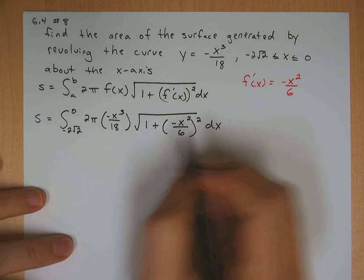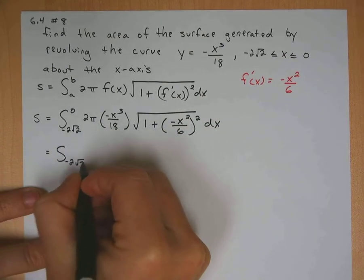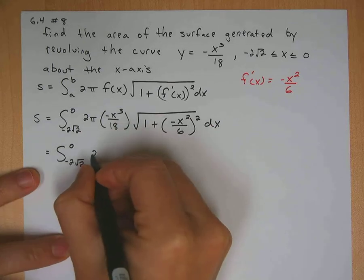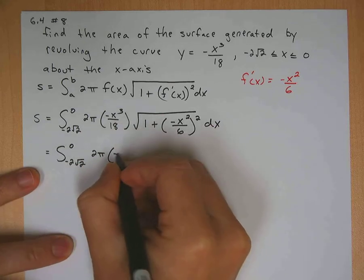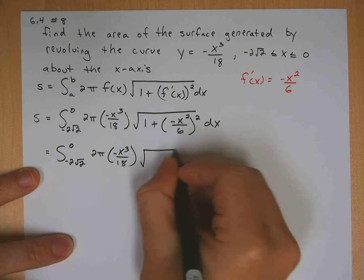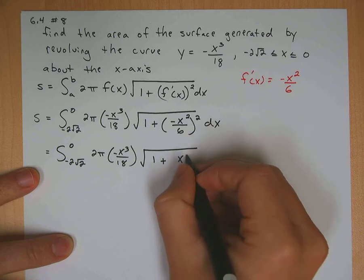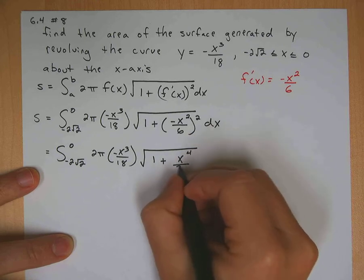Okay, so let's go ahead and square that one out. So negative 2 square root 2 to 0, 2 pi, negative x cubed over 18, square root of 1 plus, squaring a negative, x to the 4 over 36.